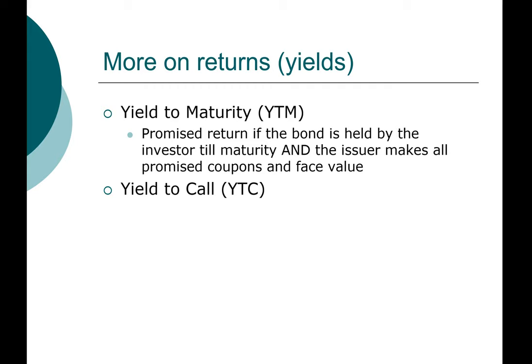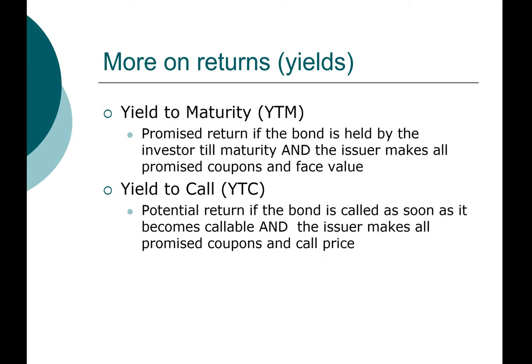An investor should be aware of that option. This is the potential return if the bond is called as soon as it becomes callable, and the issuer makes all the promised coupon payments until that time, and also the call price. Typically, a bond with a callable feature will allow the company to prepay investors. However, they may have to pay a price higher than the par value.